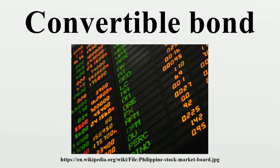Redemption options and strategies: Soft put can be redeemed for cash, stock, notes, or a combination of all three at the company's discretion. Hard put is payable only in cash. Protective put involves buying a put option for the underlying bond security. Subordinated put converts to shares by paying a charge.